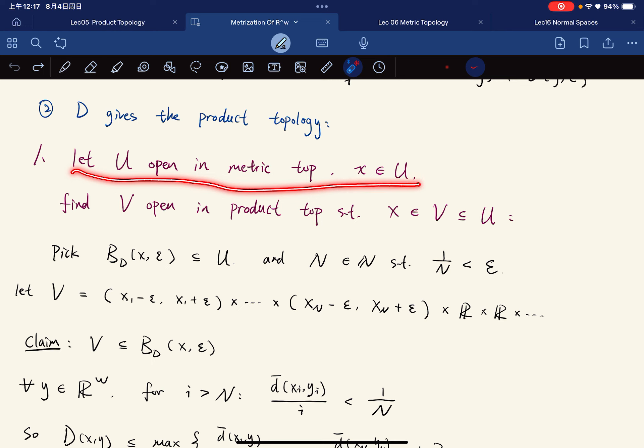Let U be open in metric topology and x in U. We want to find V open in product topology, such that x is contained in V, and V is a subset of U.